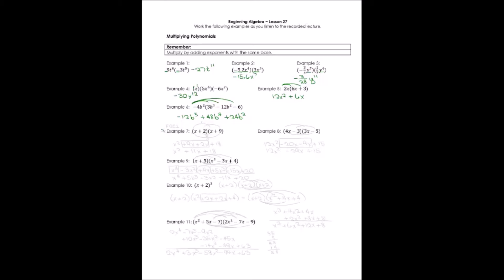Example 7 is a binomial times a binomial — a special case we multiply using FOIL: First, Outside, Inside, and Last terms. We start with the first terms: x times x gives us x squared. Then the outside terms: x times 9 gives us 9x.